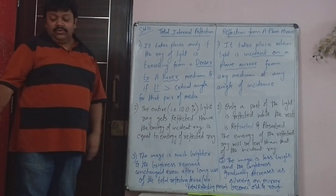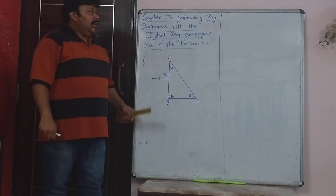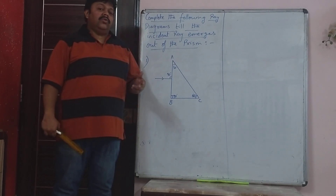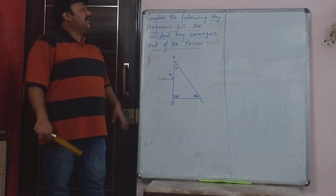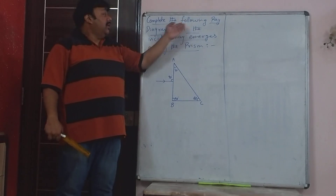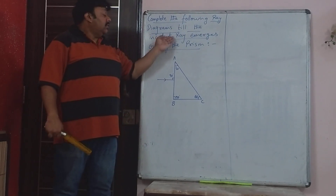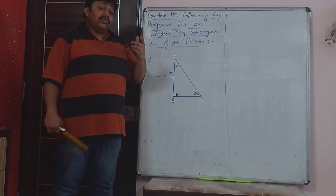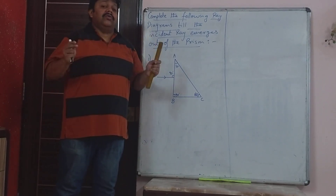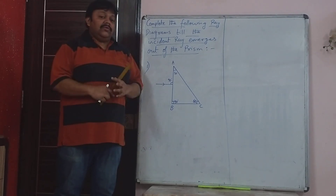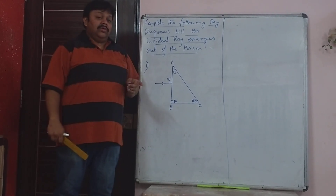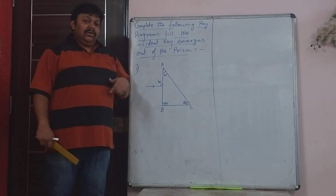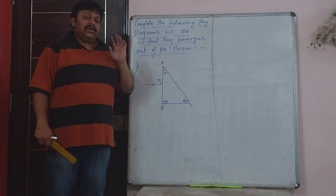Copy all this in your long book. Now there could be a question asked in the board exam, usually for two or three marks, which asks you to complete the following ray diagram till the incident ray emerges out of the prism. You have to use the diagram with the four cases. If the angle of incidence is zero — meaning if the ray is going along the normal — then the ray goes undeviated straight.